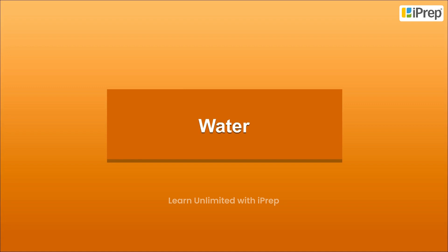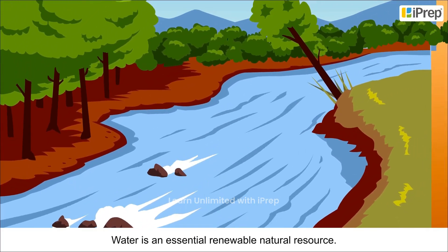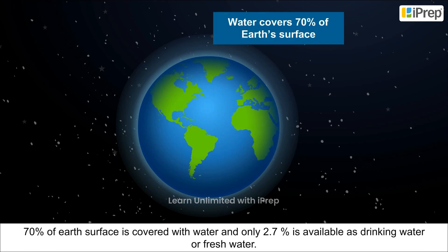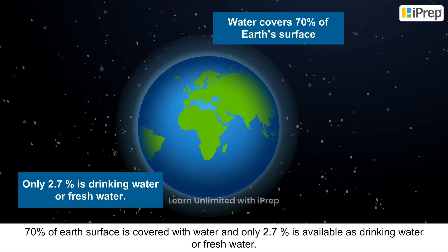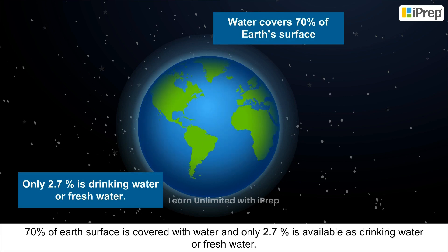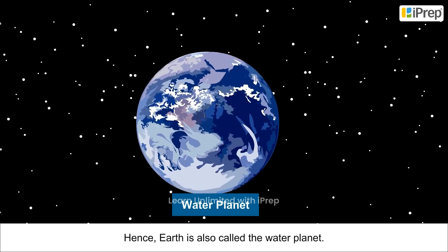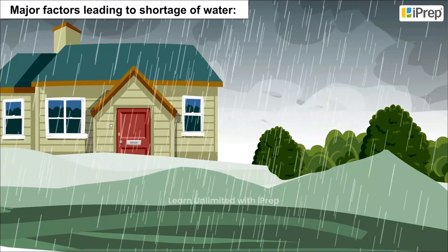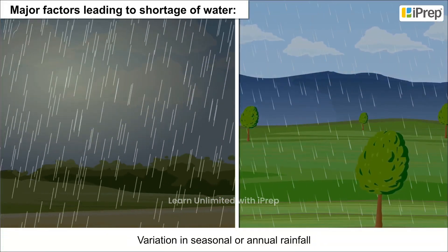Water is an essential renewable natural resource. 70% of Earth's surface is covered with water, and only 2.7% is available as drinking water or fresh water. Earth is also called the water planet.